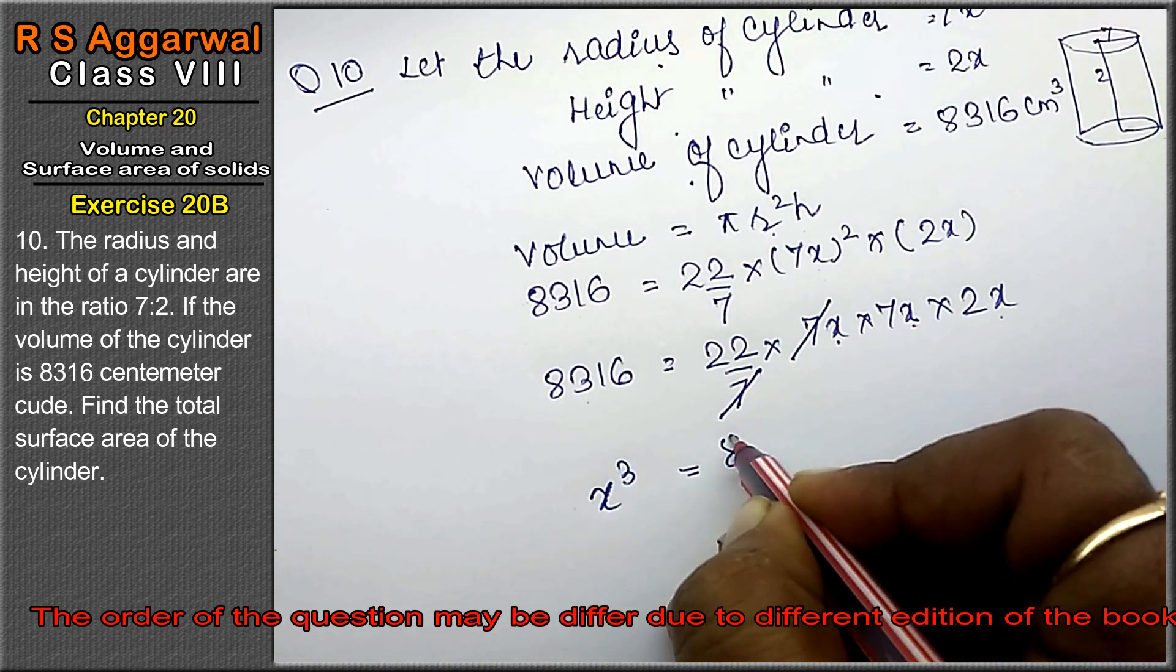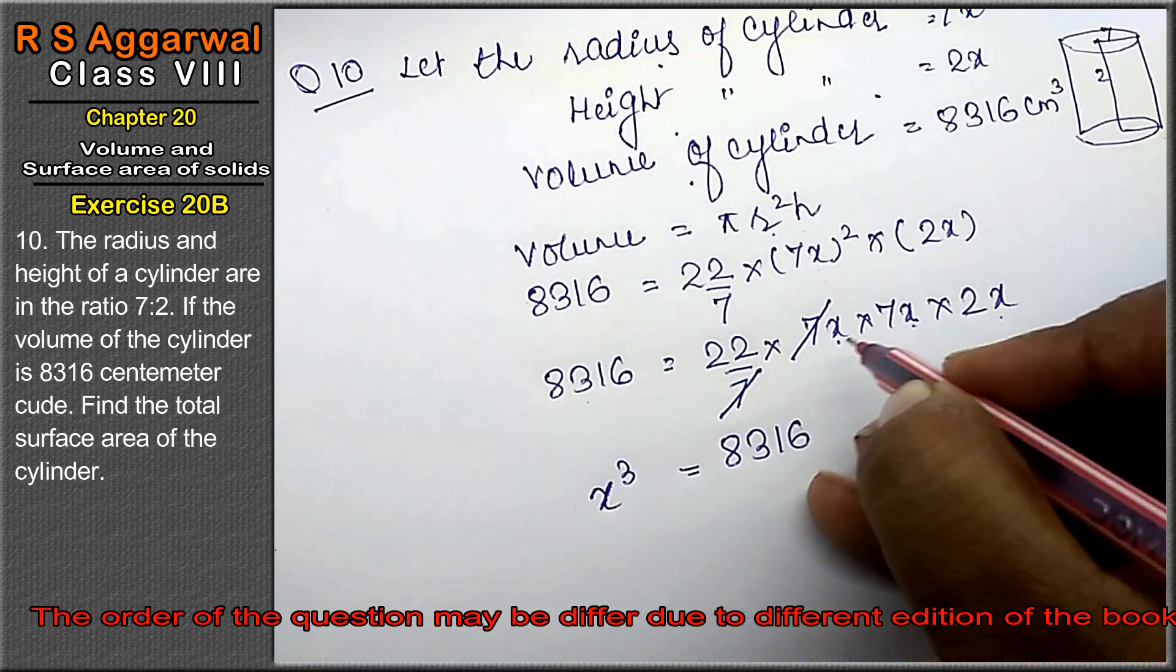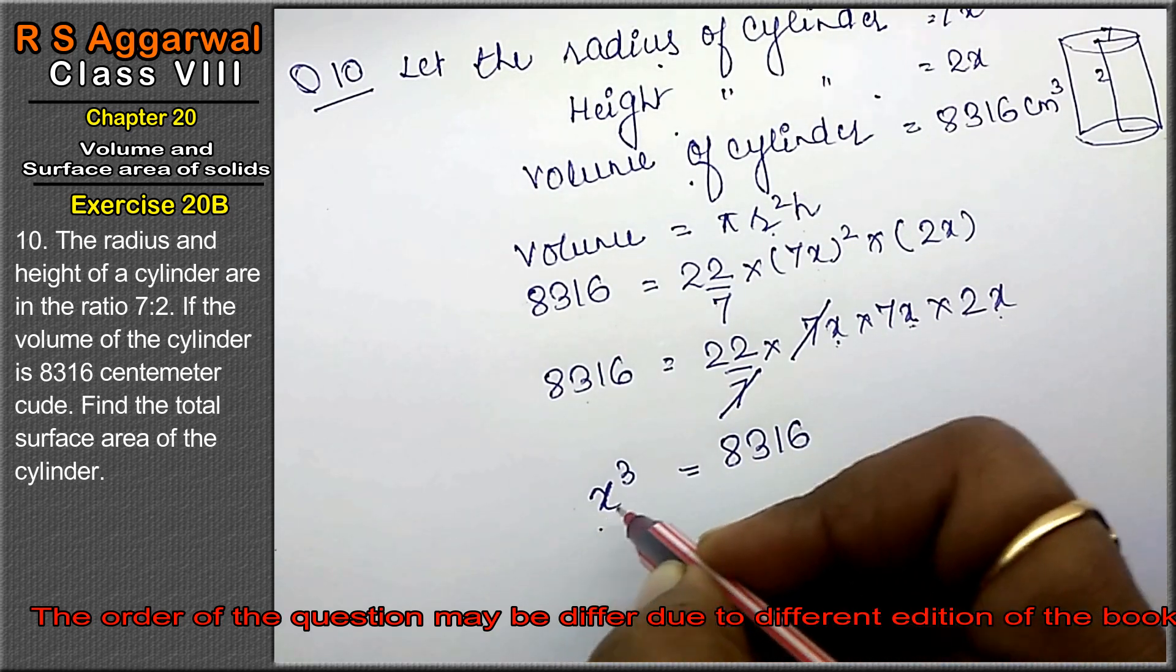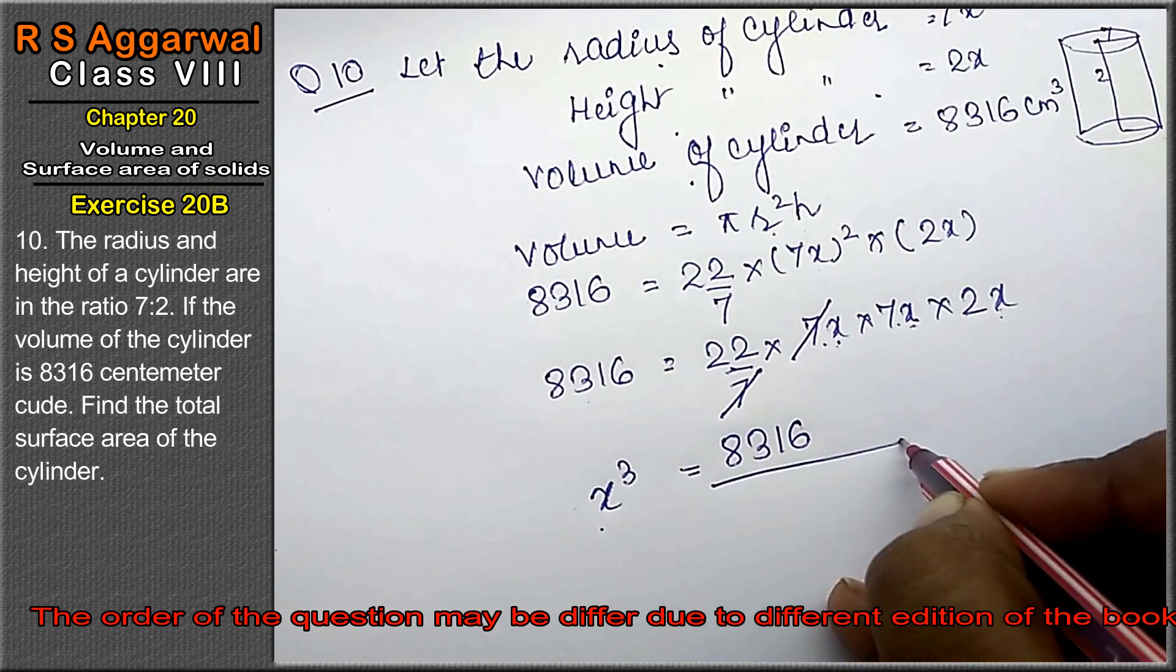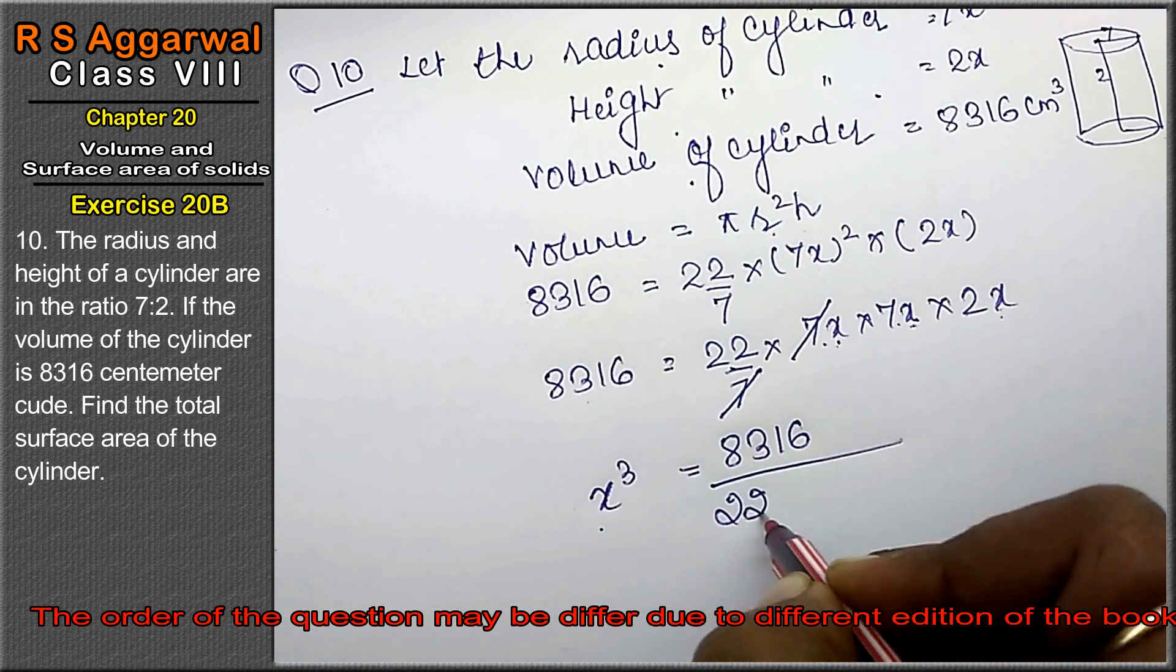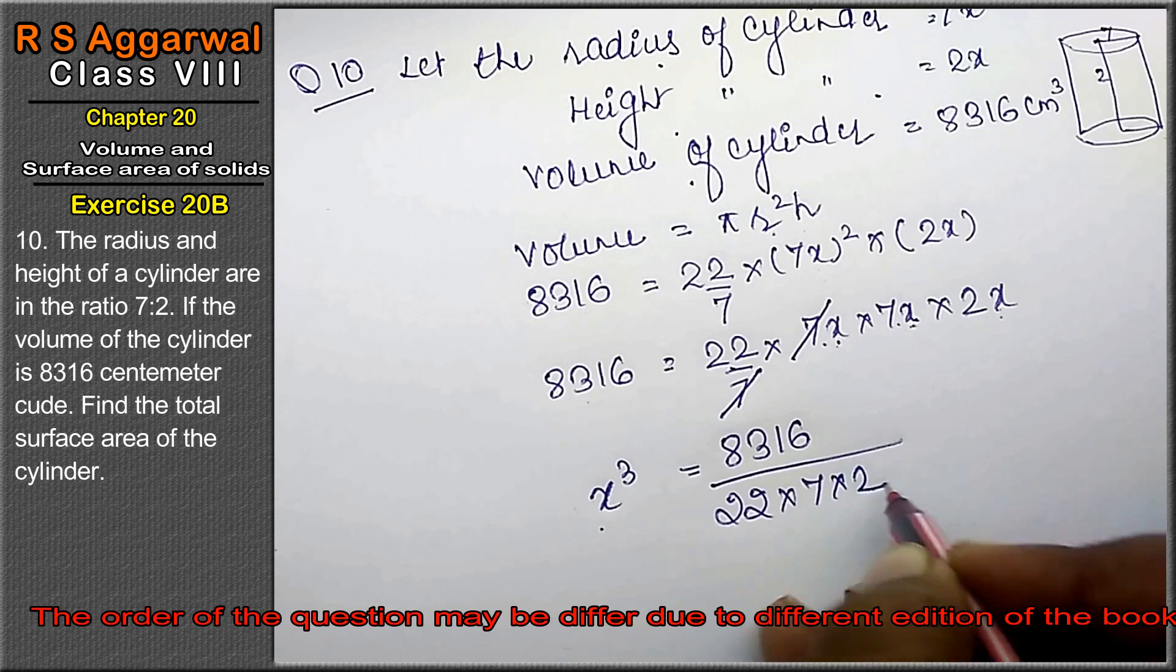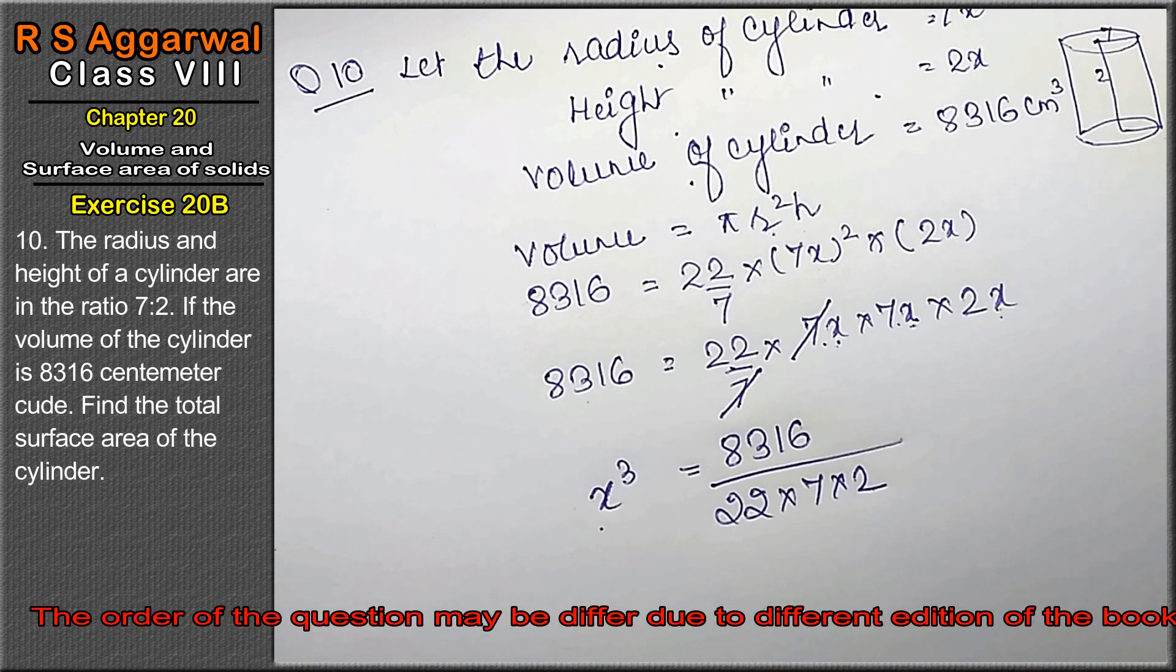8316 equals to 22 times 7 times 2 times x³. Now we will deduce it. If you multiply it, what will it be? 22 into 7 into 2, right friends? Now we will calculate it.